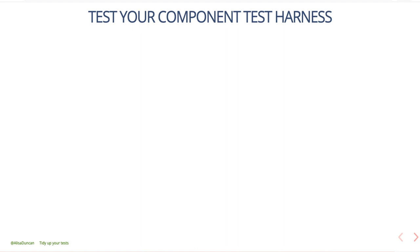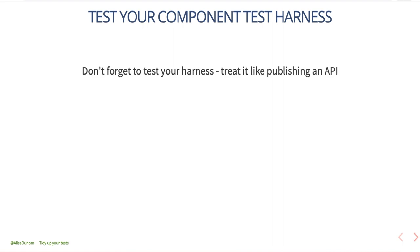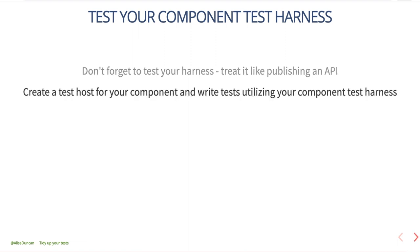However, there's one more thing you really should do: you should test your component test harness — which sounds like test inception, and it's true. You've created an API for your component, so you want to treat it as such. In order to test your test harness, you want to create a test host for the component and then write tests utilizing your component test harness. If you haven't worked with this pattern of creating a test host to test your components, check out the documentation on Angular.io in their testing section.